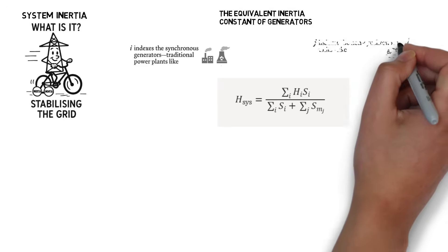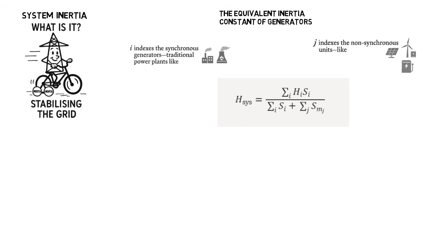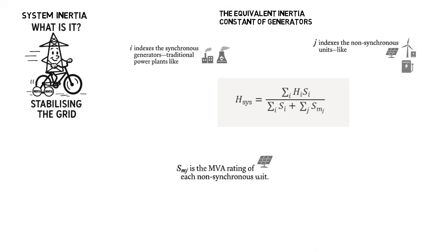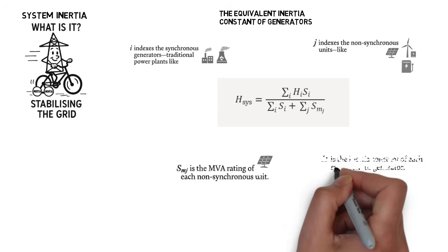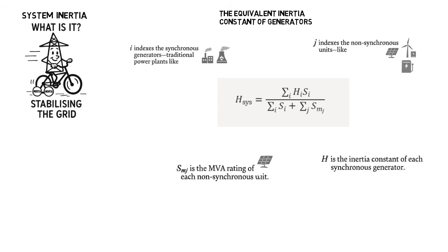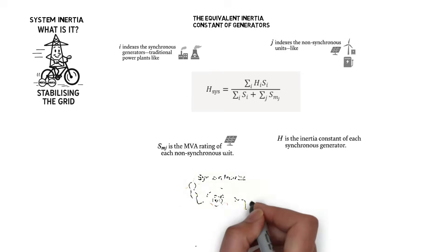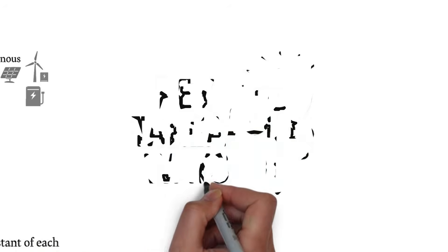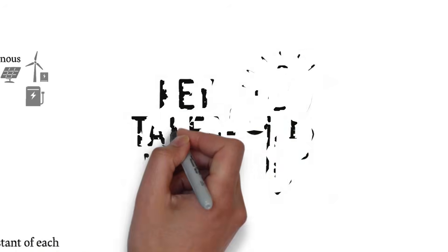J indexes the non-synchronous units, like wind turbines, solar PV, and battery inverters. SMM is the MVA rating of each non-synchronous unit. H is the inertia constant of each synchronous generator. In practice, we sum up the inertia contributions from all the synchronous generators. Renewables? They're usually left out, because they don't provide inertia in the traditional sense.